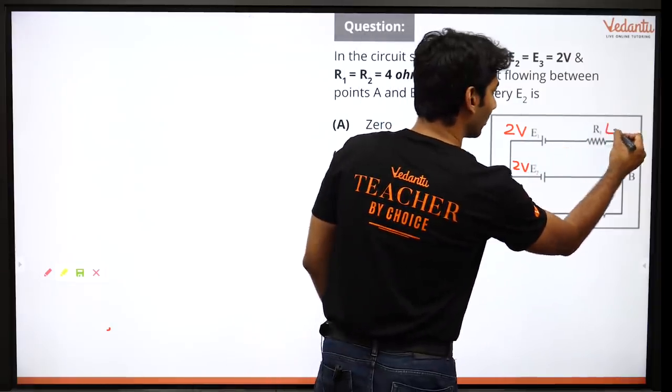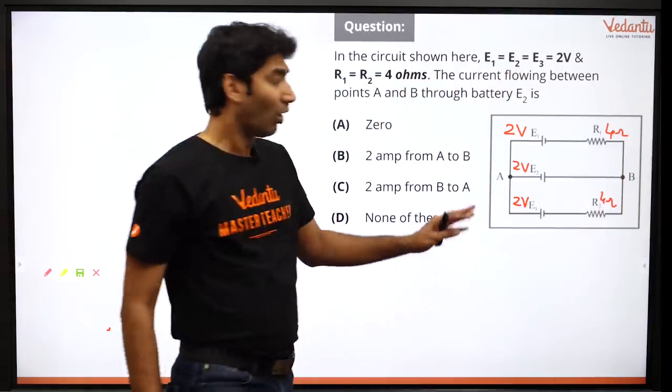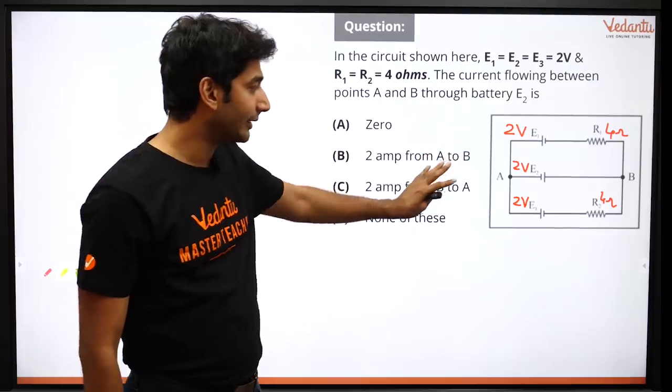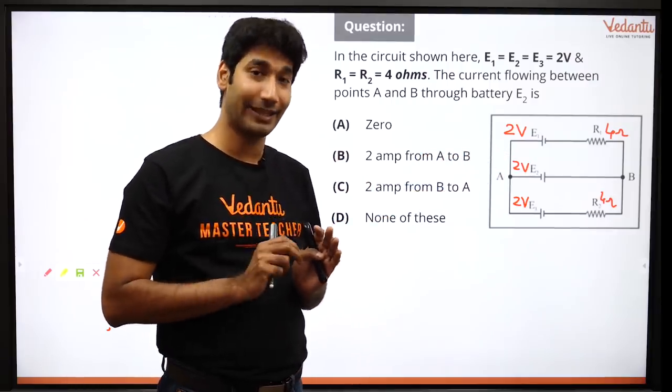And you can see these two 4-ohms, 4-ohms, 4-ohms. Right? If you see this circuit, the elements are symmetrical.